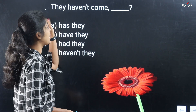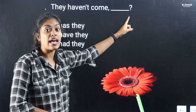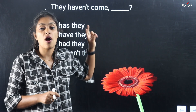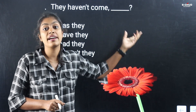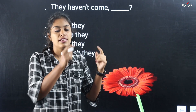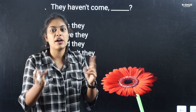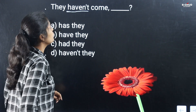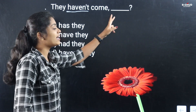Now, if you have a sentence where the auxiliary verb is negative, then the question tag is positive. And if you have a sentence where the auxiliary verb is positive, then the question tag is negative. Now, 'have not' is negative, so of course the question tag is positive.